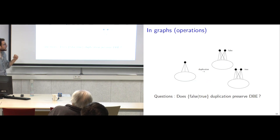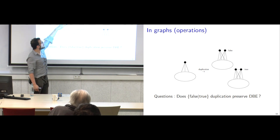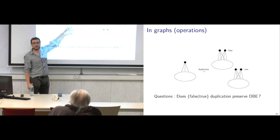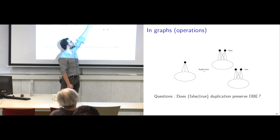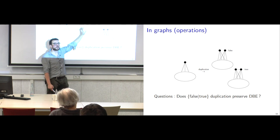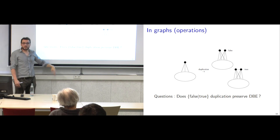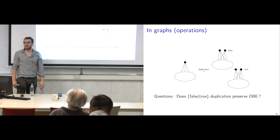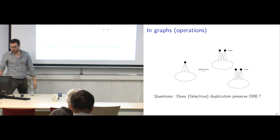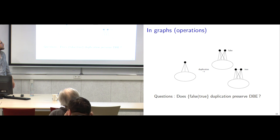We also don't know if duplicating a vertex — either as false twins (not connected) or true twins (connected) — preserves the DBE. So that gives two more open questions. These are the kind of questions on the grill, but we still don't manage to find a way to get through them.